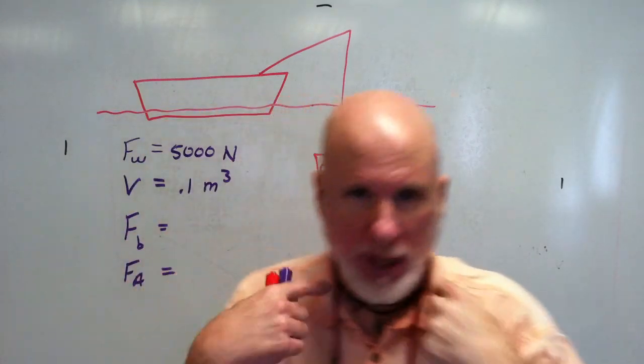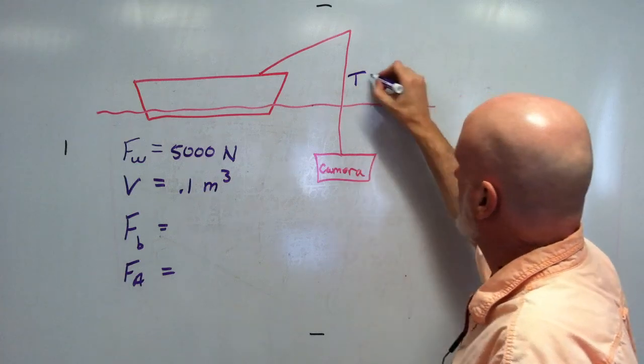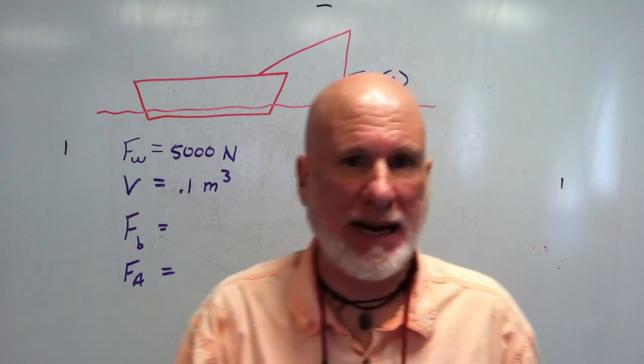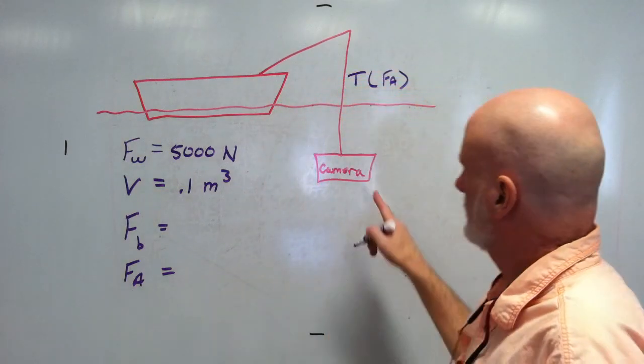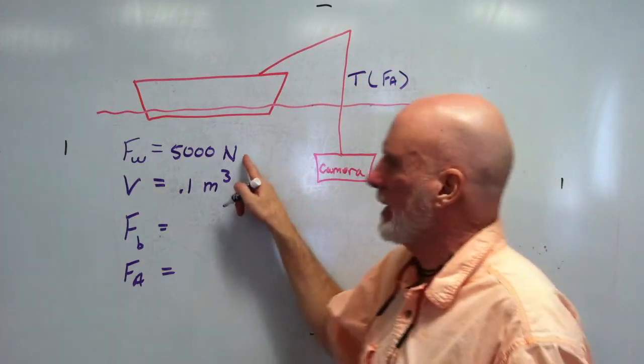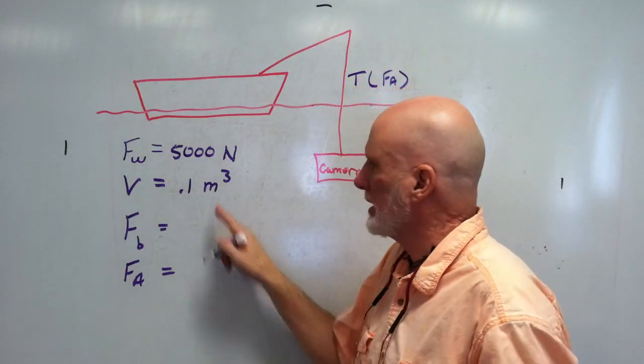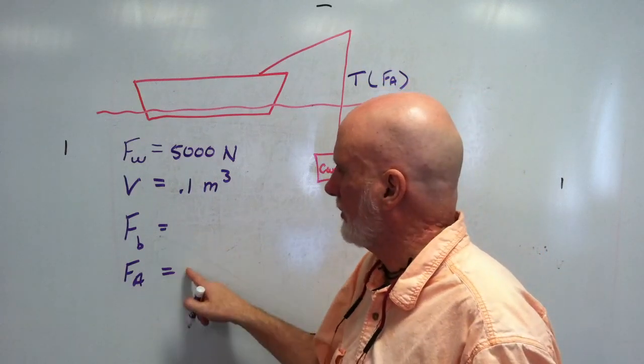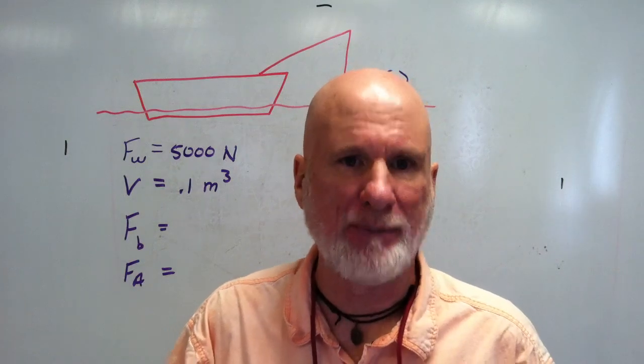What I want to know ultimately is the tension, which is the same as the apparent weight would be the tension of that camera. That camera has a weight of 5,000 newtons. It has a volume of 0.1 cubic meters. I want to know the buoyant force, and I want to know the apparent weight of the camera.